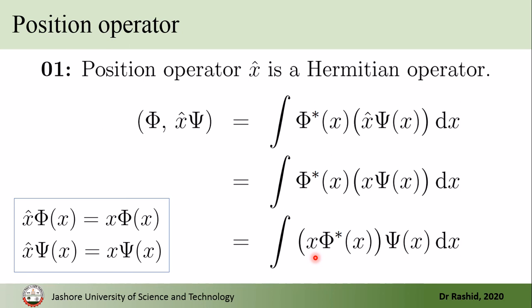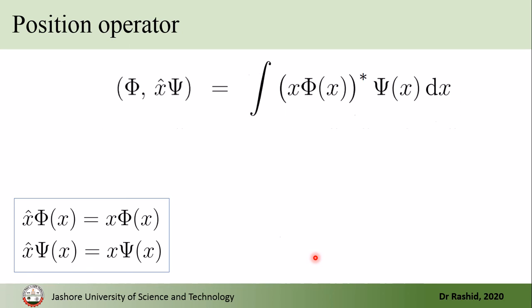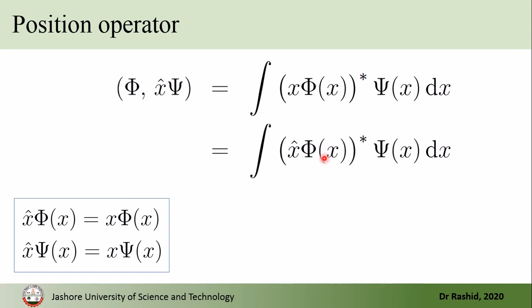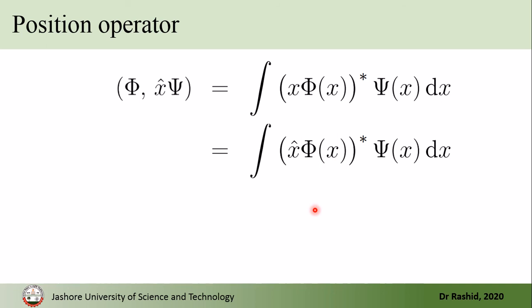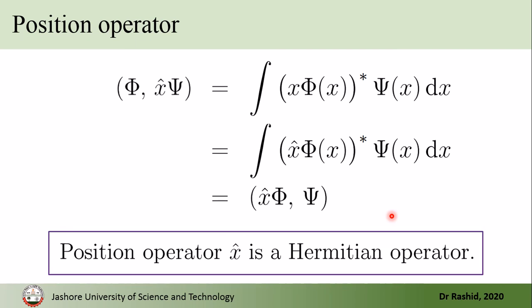Now x is a real quantity, so if we take the complex conjugate of it, it will be the same. With the complex conjugate we write it like this. We again use the definition so that we have x-hat acting on phi. From the definition, this is equal to this — meaning x-hat acting on the second function is the same as x-hat acting on the first function. By the definition we conclude that the position operator x-hat is a Hermitian operator.